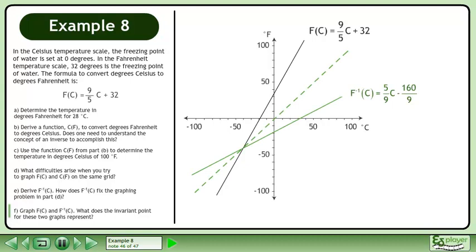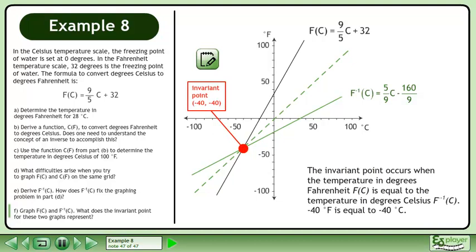Now draw the graph of the inverse, f inverse of c equals 5 over 9c minus 160 over 9. The invariant point occurs when the temperature in degrees Fahrenheit is equal to the temperature in degrees Celsius. Negative 40 degrees Fahrenheit is equal to negative 40 degrees Celsius.